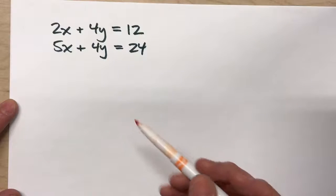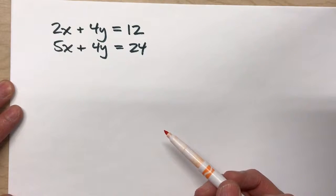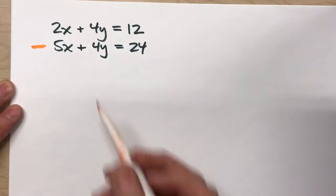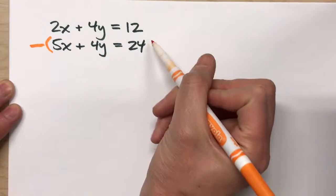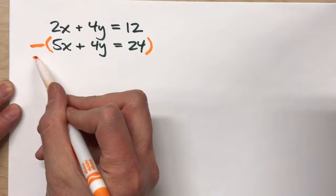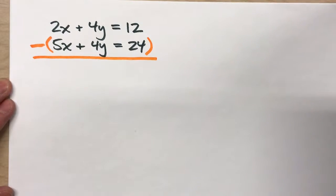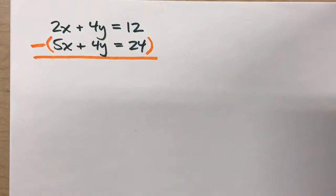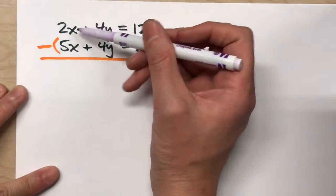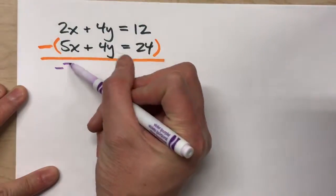So what we can do this time is instead of adding the two equations together, we're going to subtract the equations. I'm going to put this whole second equation in parentheses and subtract it from the first equation. And the reason we do that is because when we subtract, two x's minus five x's gets us negative three x's.